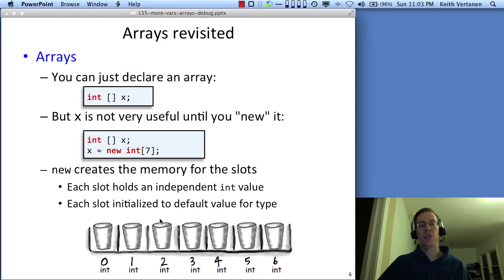If I declared an integer array and created it with seven slots, I essentially have seven cups and each cup can hold an integer value. Once I create this thing x and say it's equal to new int bracket seven, what's actually inside those cups? Well, Java is going to initialize each of the cups to a default value. And in the case of an integer, that default value is going to be zero.